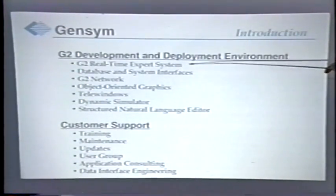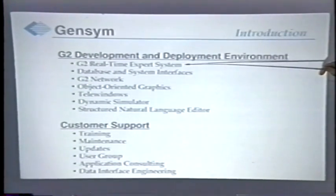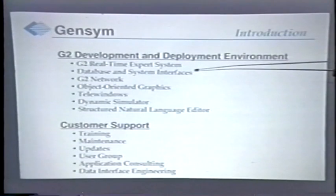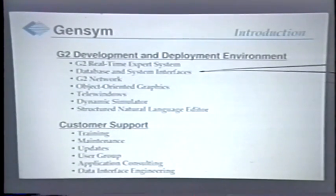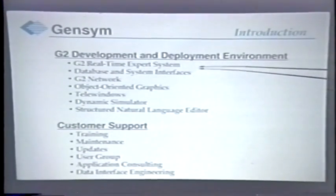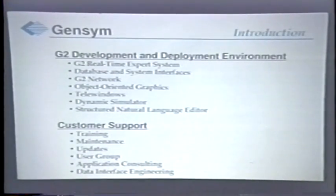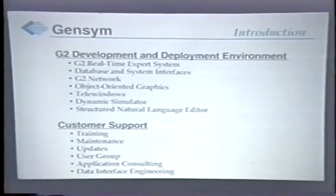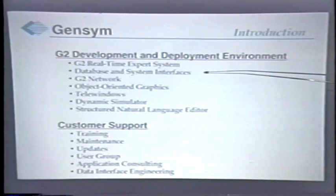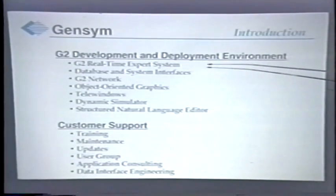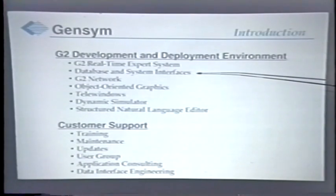In addition to the knowledge-based system in real-time, G2 also brings together technology for high-performance interfacing to external databases and systems. For example, we have interfaces to Oracle, Sybase, RDB, and other common databases. We have interfaces to the common systems used in the process industry, manufacturing, telecommunications, and other areas of application.